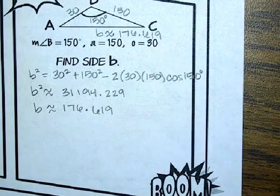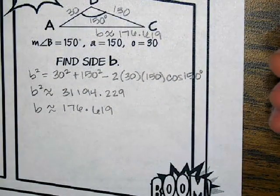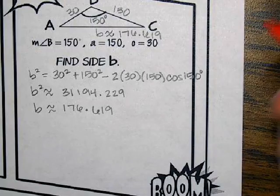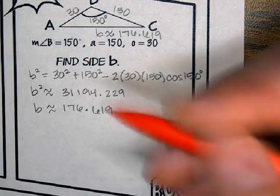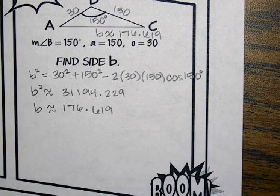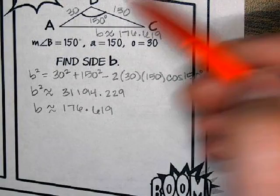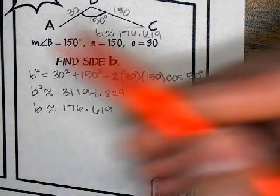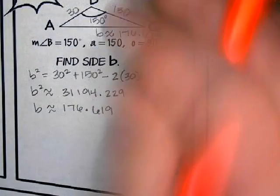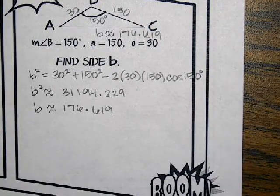If we're going to do law of sines, we want to avoid the ambiguous case. We don't want to do angle-side-side. We want to make sure that if we're using law of sines to find more information, the information we use is angle-angle-side or angle-side-angle — to make sure we're not doing the ambiguous case, not accidentally doing a situation where there are two triangles and we accidentally find the wrong one.